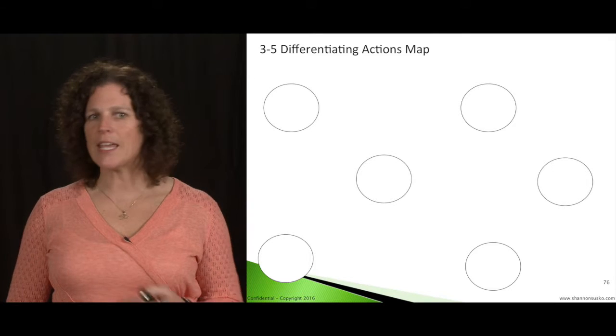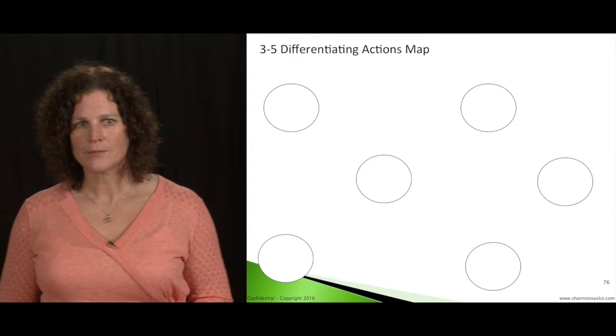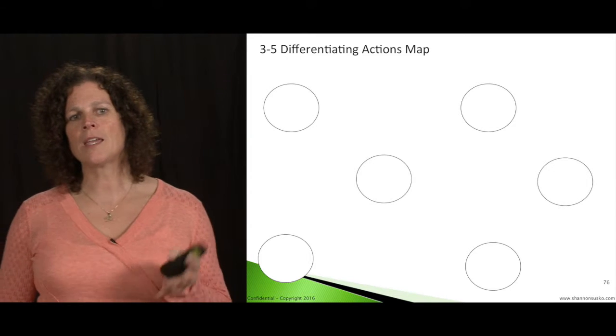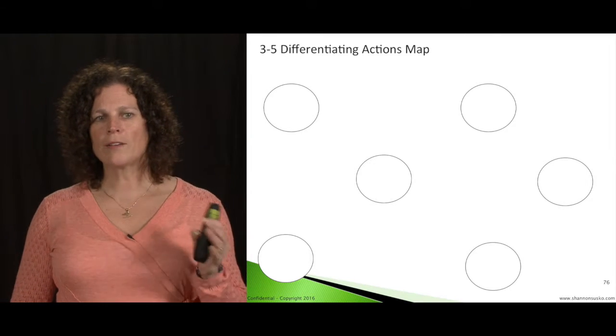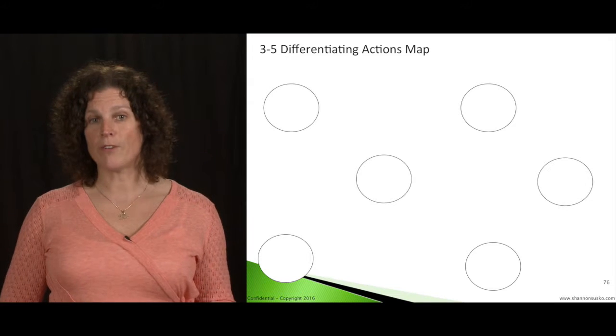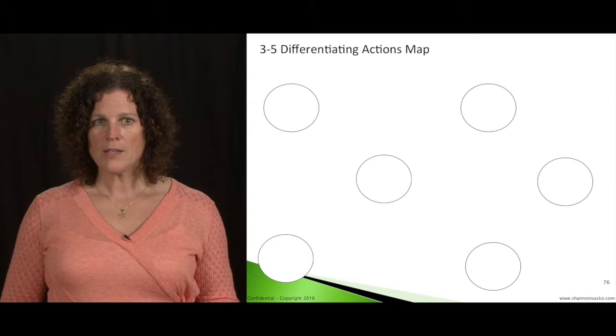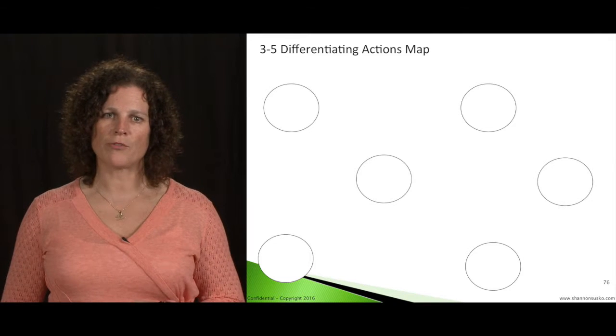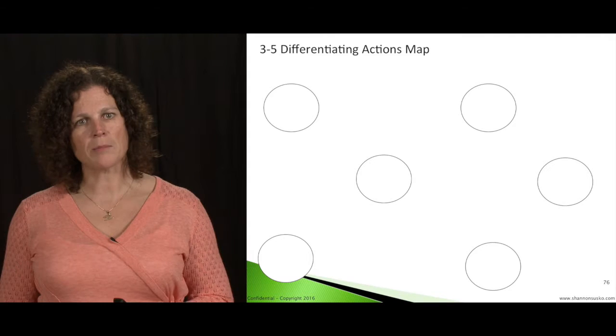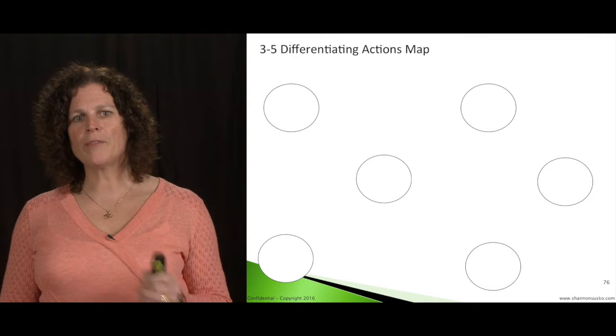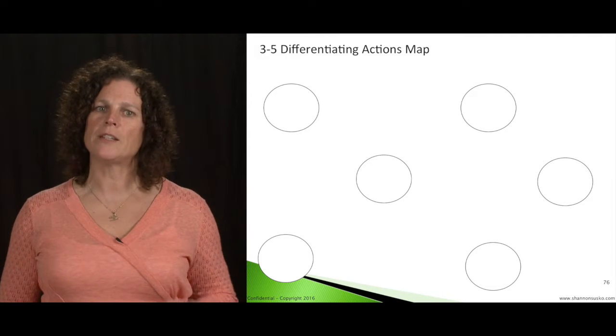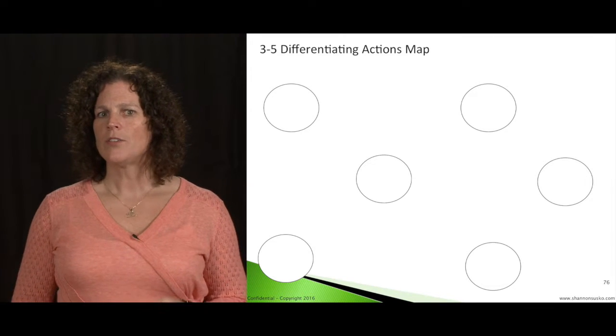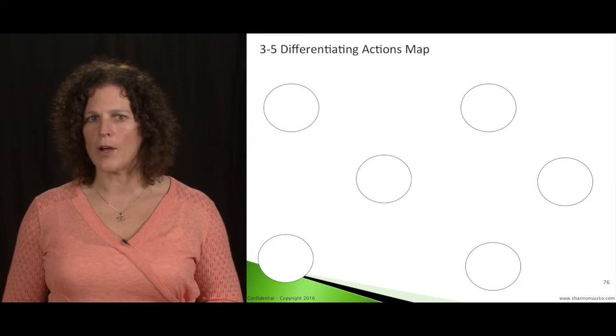So this is as simple as taking a blank piece of paper. You can download the tool off my site, ShannonSusco.com. But it's as simple as taking a blank piece of paper, drawing five circles, no more than five, actually no less than three, and come up with from you after looking and studying your attribution framework, having a good discussion with your team, you're probably already doing some of these actions that you want to be differentiated on. And then there's probably a couple other key ones that you need to write down and really talk about and discuss.